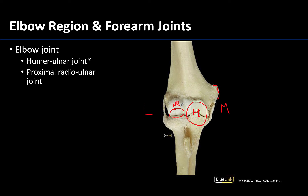Just distal to both of these is the proximal radio-ulnar joint. The radius and the ulna articulate in three separate areas, forming three different joints. The proximal radio-ulnar, as the name suggests, is the most proximal of these and is formed by the head of the radius and the radial notch of the ulna, allowing the head of the radius to rotate.